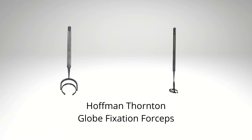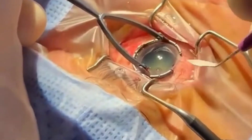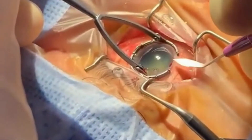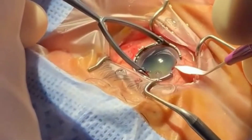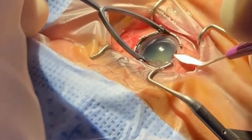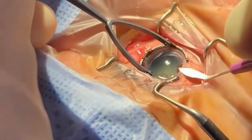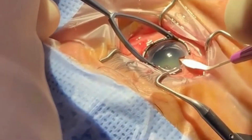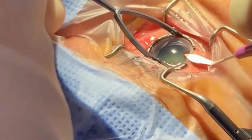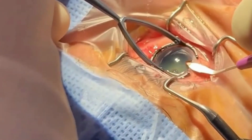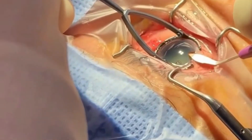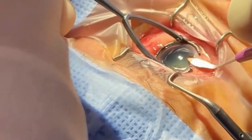Newer ring-shaped globe fixation forceps offer certain advantages over conventional forceps. Hoffman-Thornton globe fixation ophthalmic forceps have a ring that holds the globe in position by providing a larger surface area of contact.